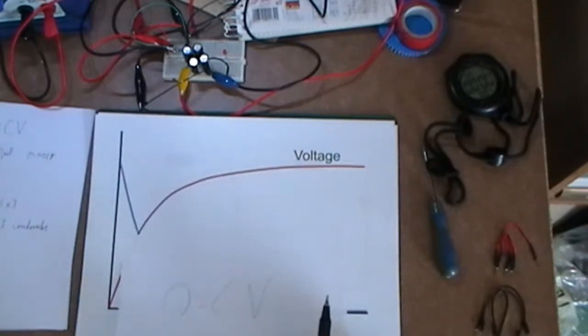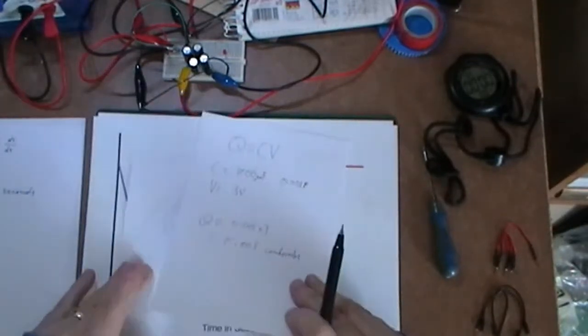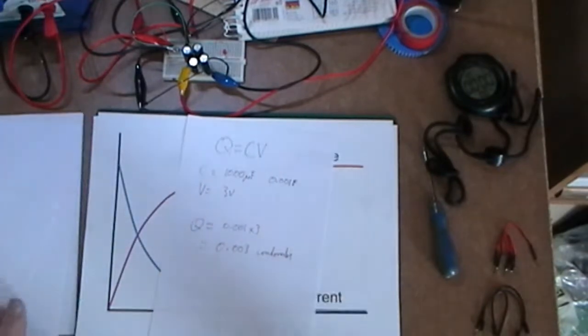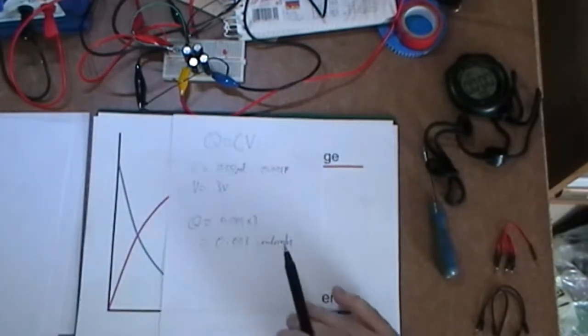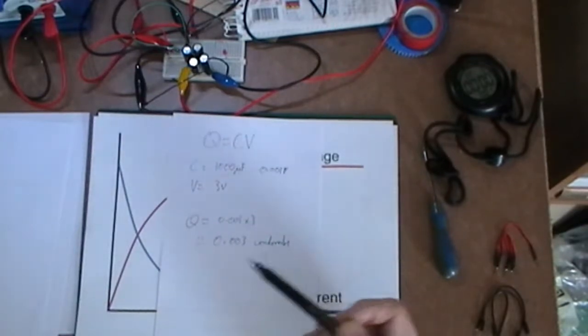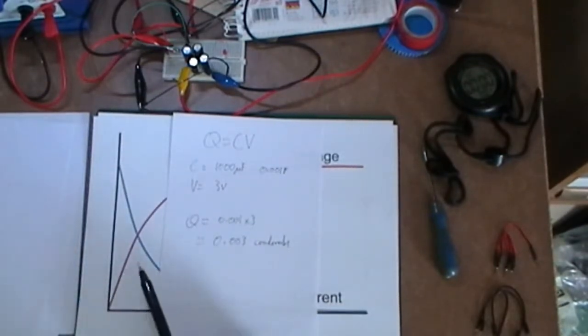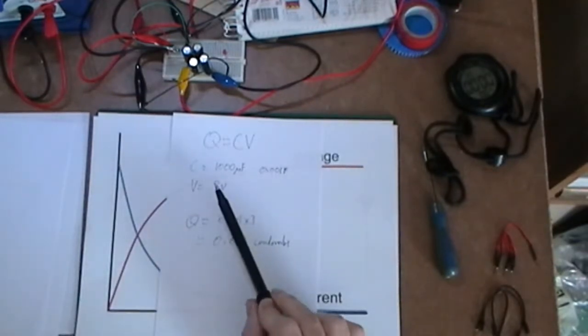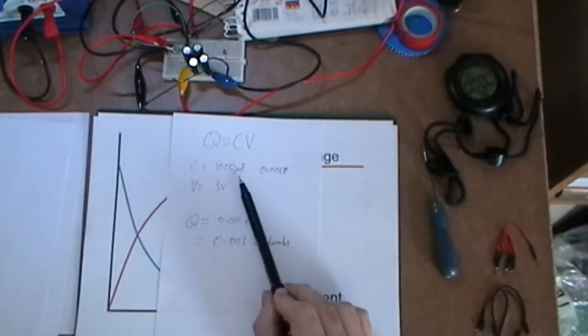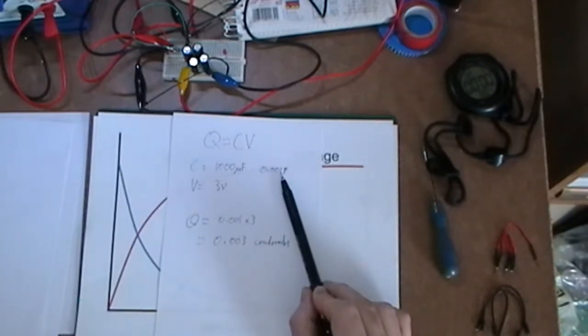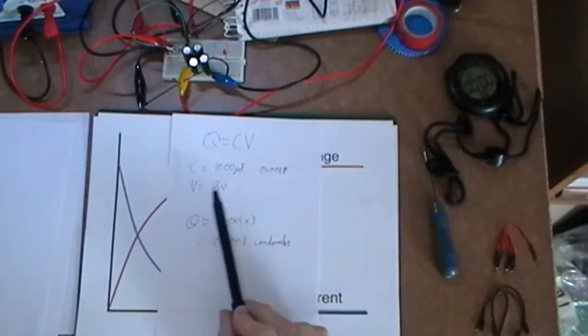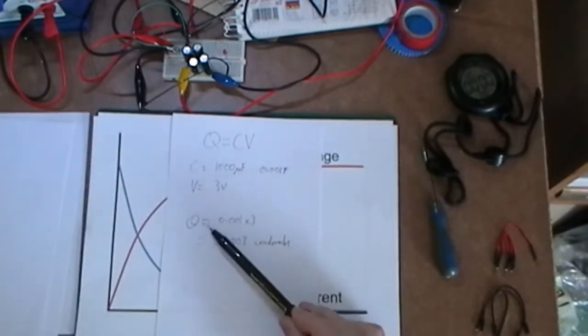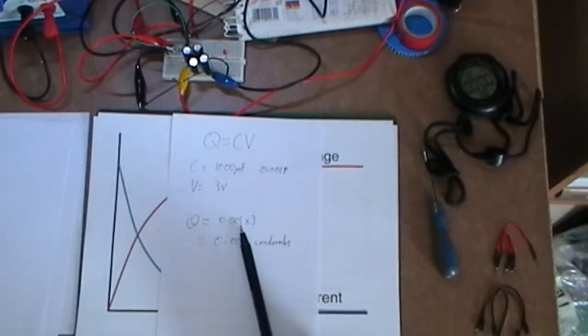So let's have a quick look at that equation. Now in my previous video I had a capacitor, I put some volts across it and created some charge. So I had a thousand microfarad, which is basically a 1 millifarad capacitor, and I put 3 volts in. So what does the charge equal? So I presume that must be the capacitance times by the voltage, which gives me 0.003 Coulombs.